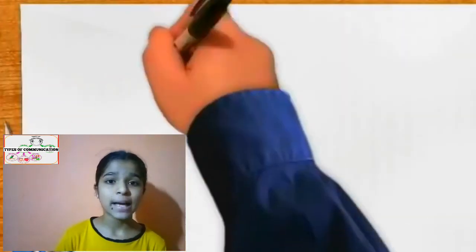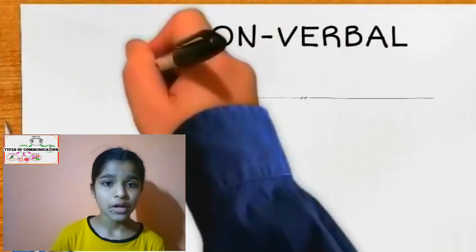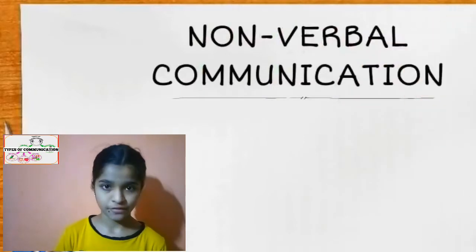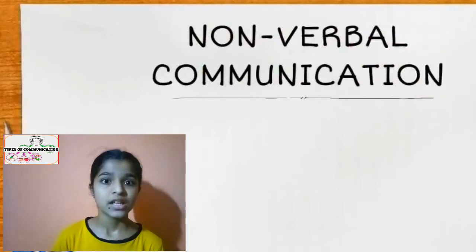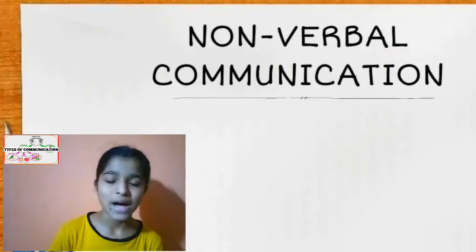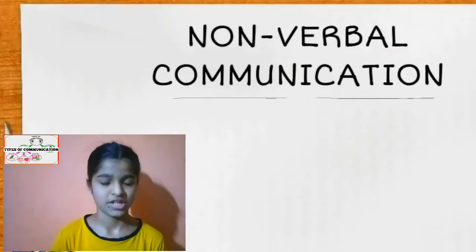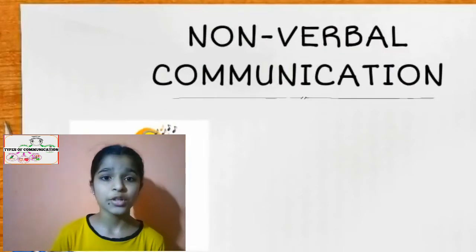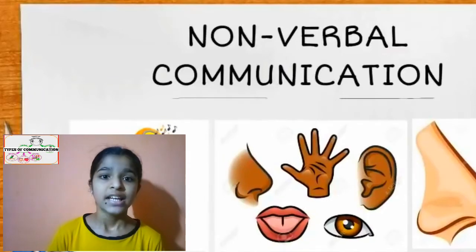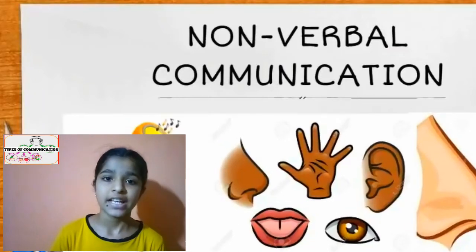Now let us see another example. Examples like radios, TVs, and satellites are types of communication which can be only one way, not two ways. Such examples can be included into mass communication.